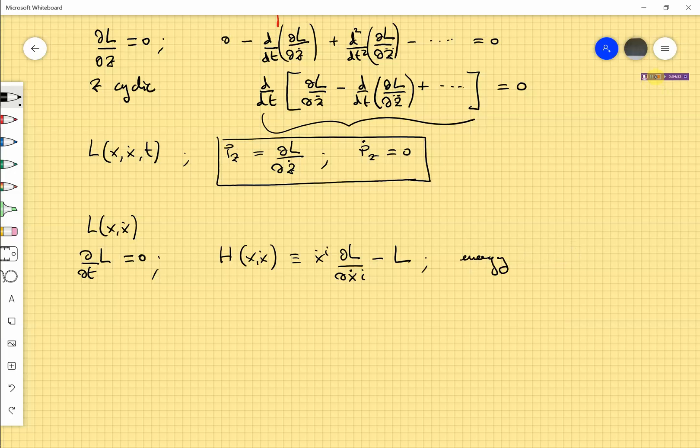We can prove that H is a constant quantity because it takes always the same value, so it is independent of time. This is the same as H dot. This is just to use the notation.